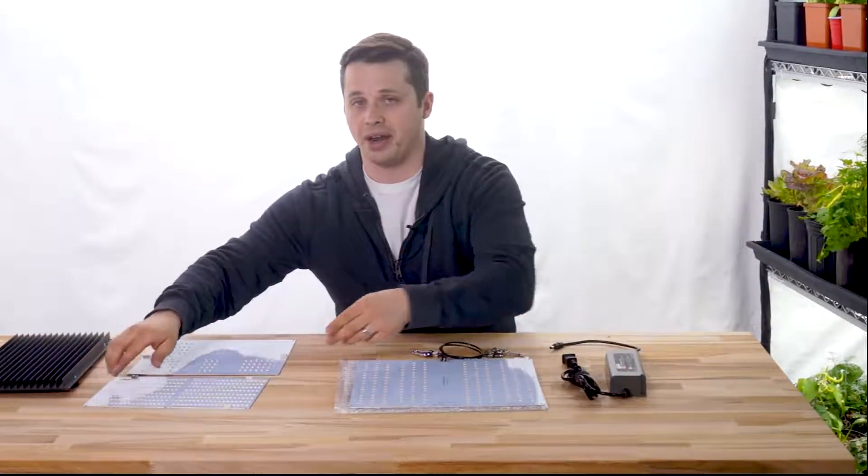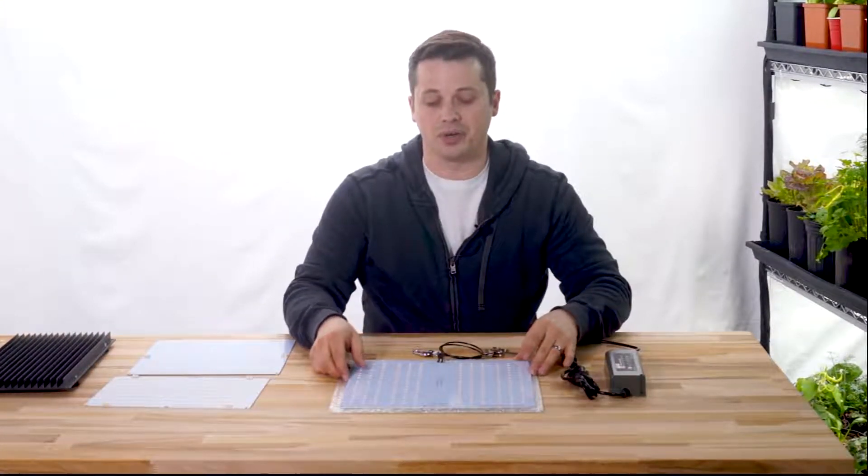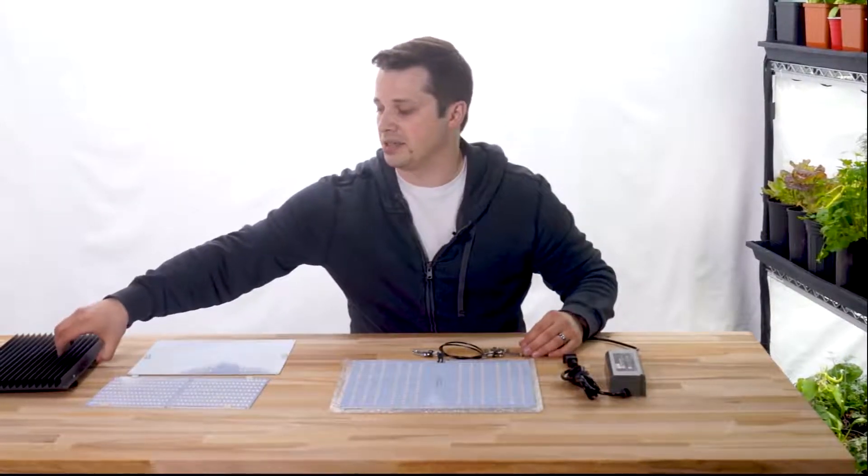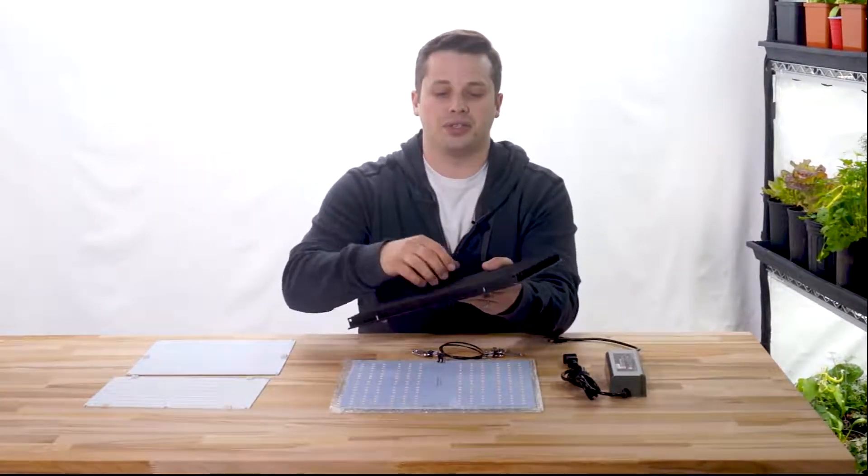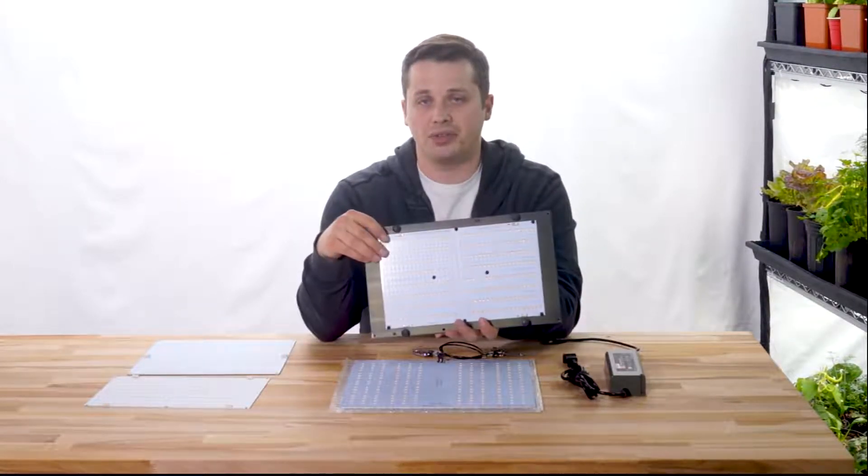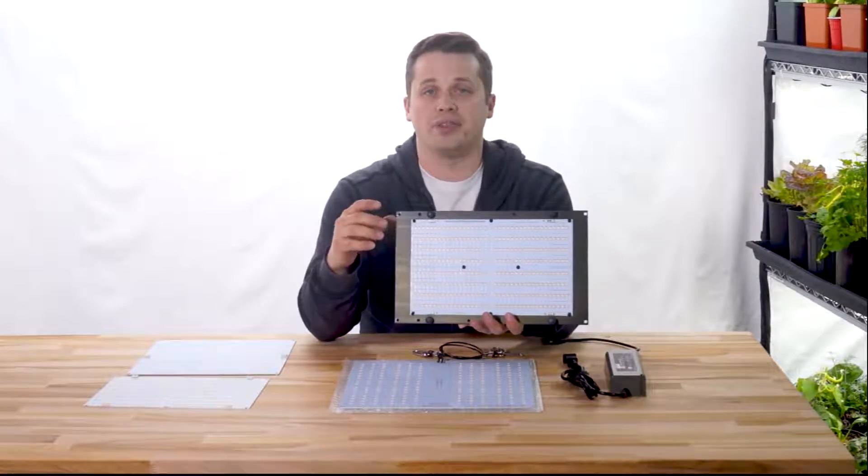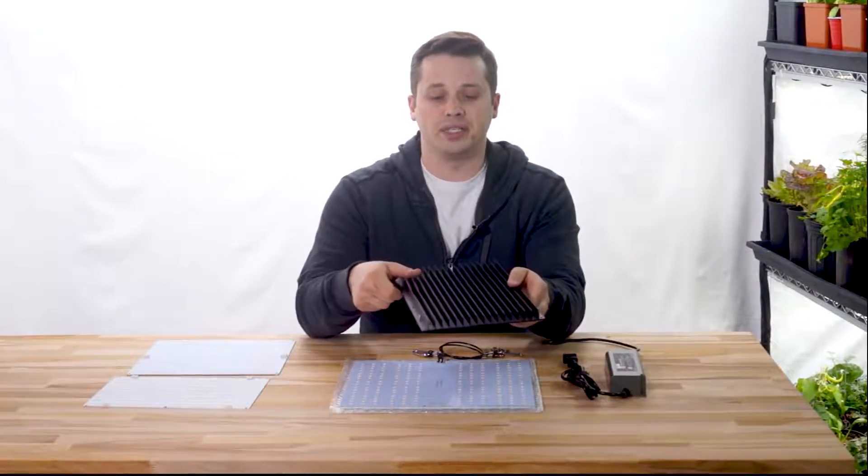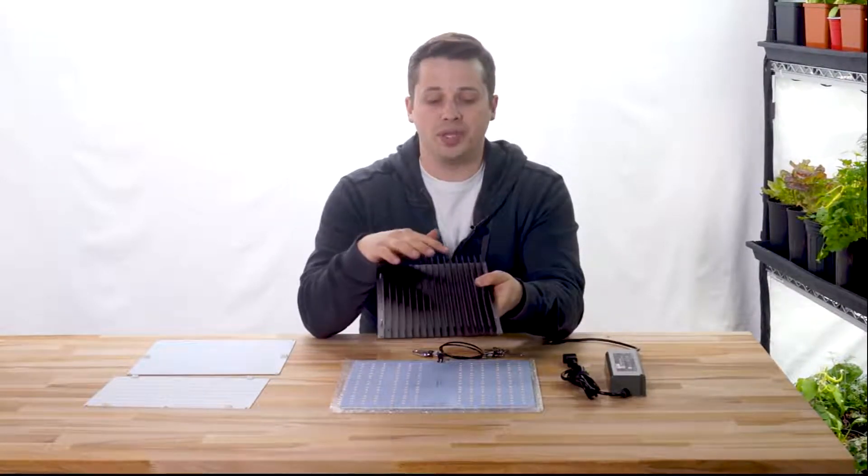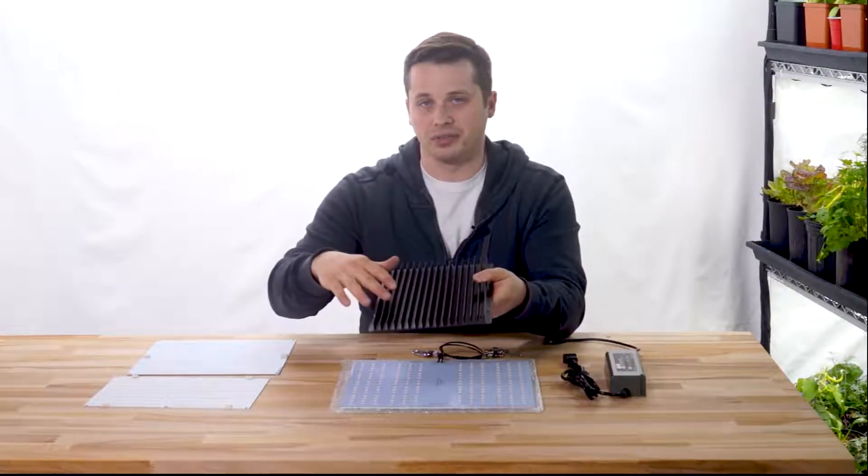A couple things right off the bat that I like about the HLG-100. Number one is that it doesn't require a heat sink. So a heat sink is this piece right here. It's just a big chunk of aluminum with fins. You need a heat sink for the QB-288 because the diodes on there are so densely packed and they're getting a lot of power, so they need a way to dissipate that heat somehow. And you do that with all this surface area on this chunk of aluminum.